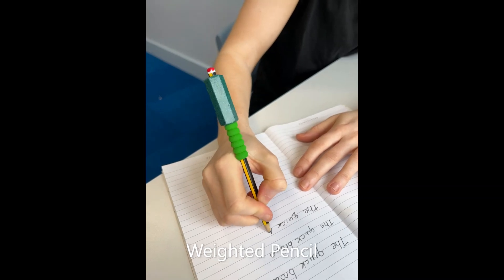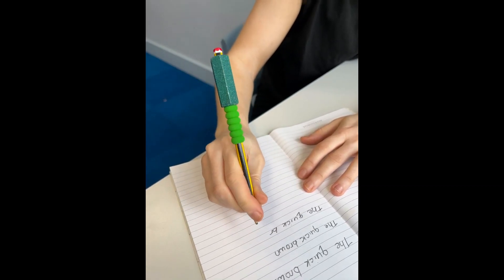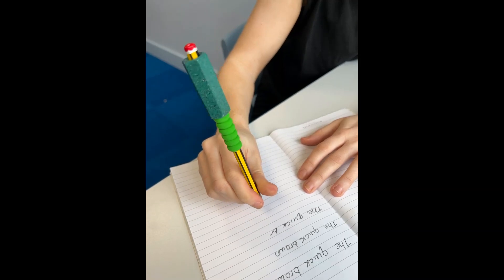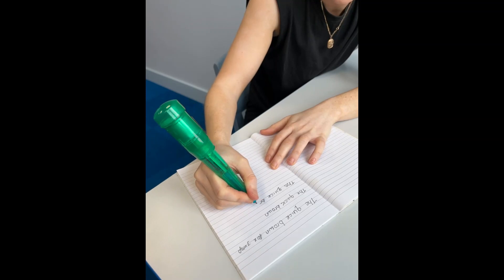For children who have difficulties regulating pencil pressure or focusing on handwriting due to sensory processing difficulties, we also sometimes consider a weighted pencil, a pencil topper spinner, a vibrating pen or a writing slope.